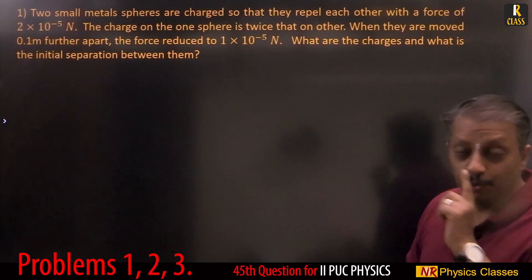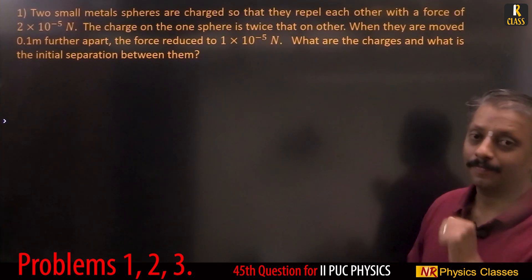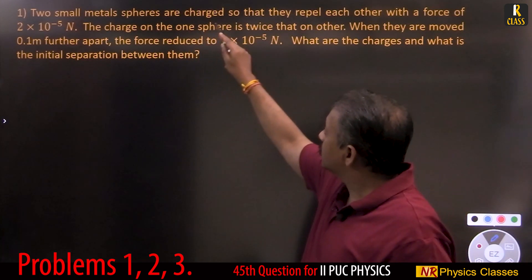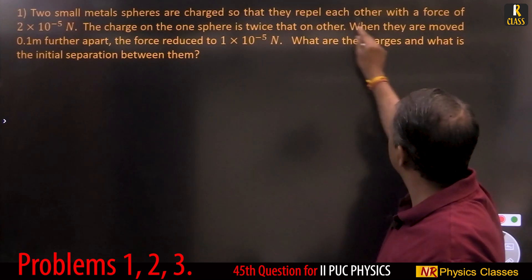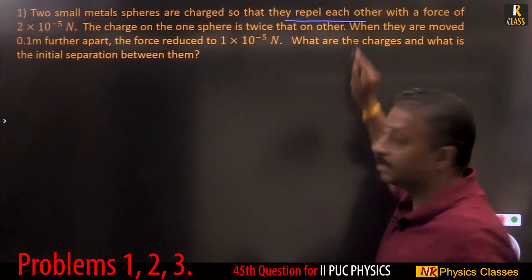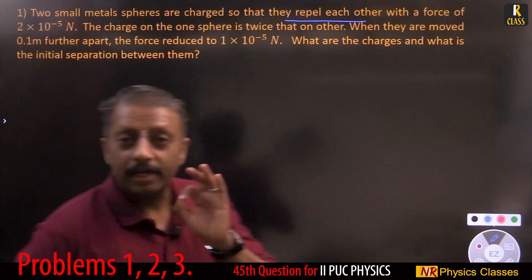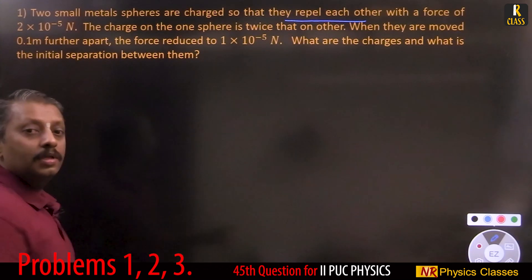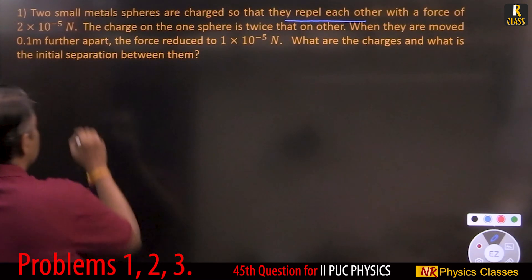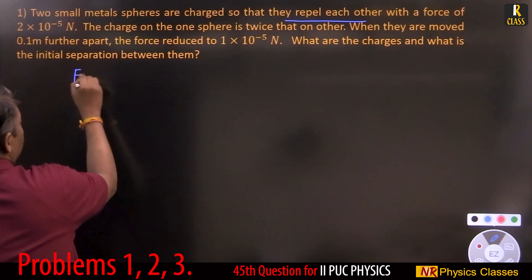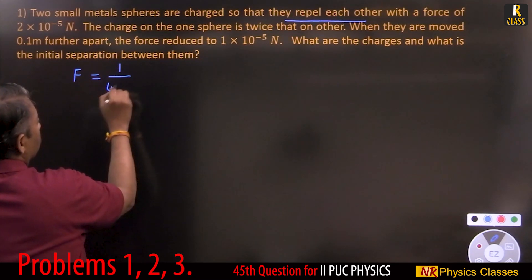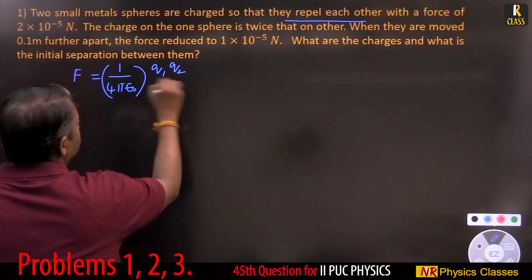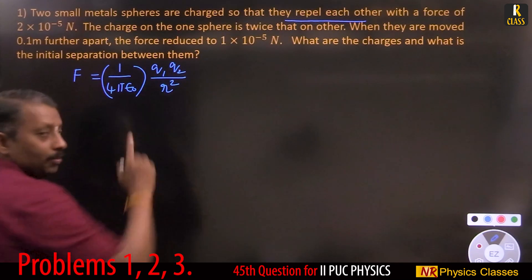Two small metal spheres are charged so that they repel each other. They repel each other — that means force. Don't forget to write the formula, because without the formula you won't get marks. The formula is: Force F = (1 / 4πε₀) × (q₁q₂ / r²). Writing the formula earns one mark.